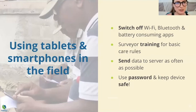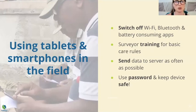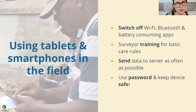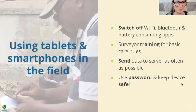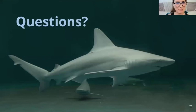Some tips about using tablets and smartphones in the field: save the battery by switching off Wi-Fi, Bluetooth, and other battery-consuming apps. Train enumerators in basic equipment care rules so they know how to handle and take care of the equipment. It's good practice to send data to the server as often as possible — whenever data collectors come back to the office, it's safer. Also, put a password on the device and keep it safe, because if it's stolen, your data is stolen too.